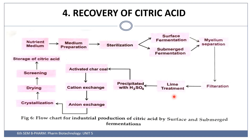The industrial flowchart is: nutrient draw medium → medium preparation → sterilization → fermentation (surface or submerged) → mycelium separation → filtration → lime treatment → precipitation using sulfuric acid → treatment with activated charcoal → cationic exchange → anionic exchange → crystallization → drying → screening → storage as citric acid.